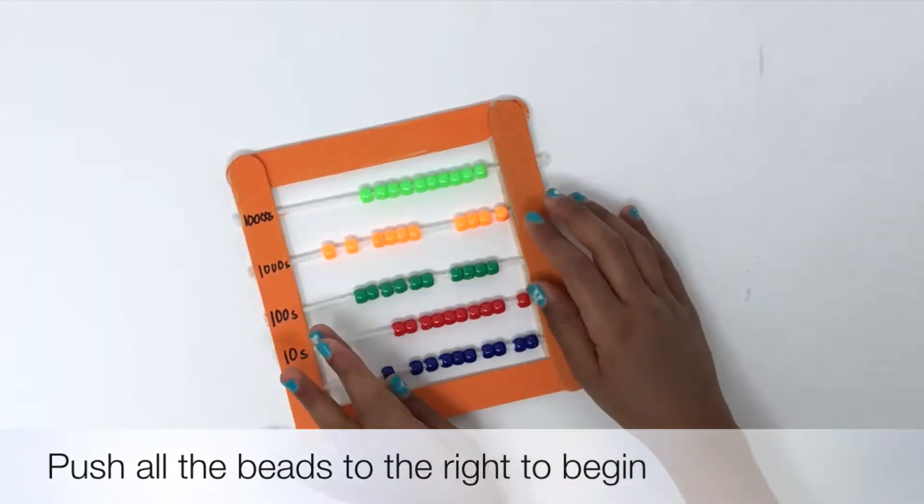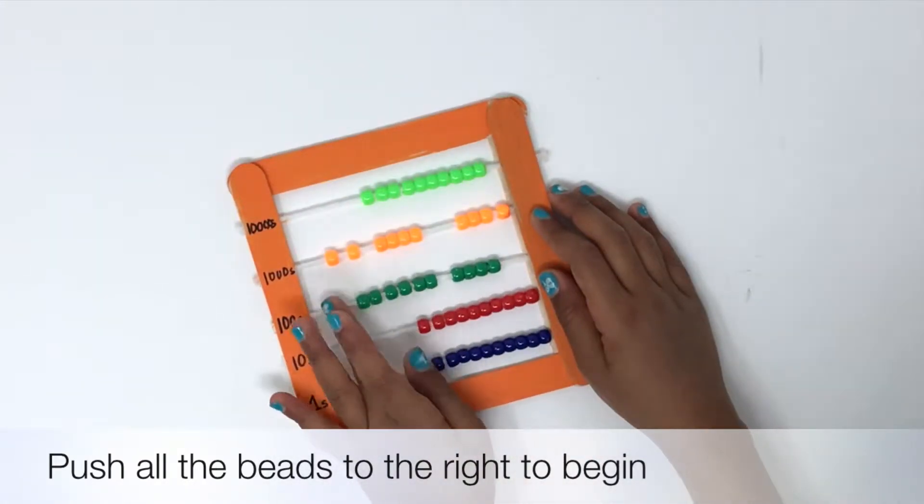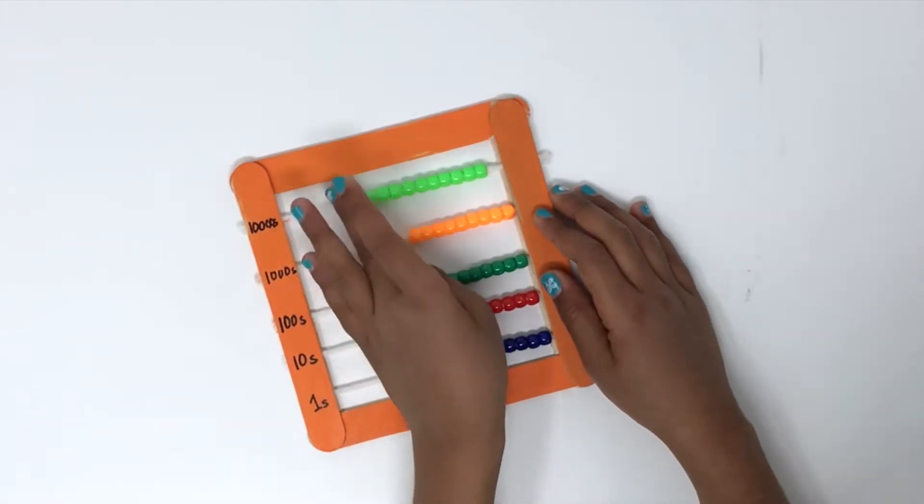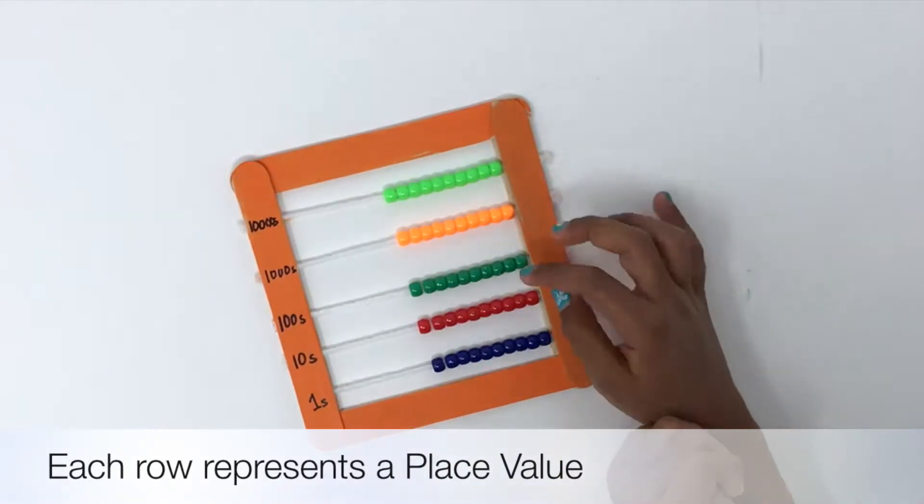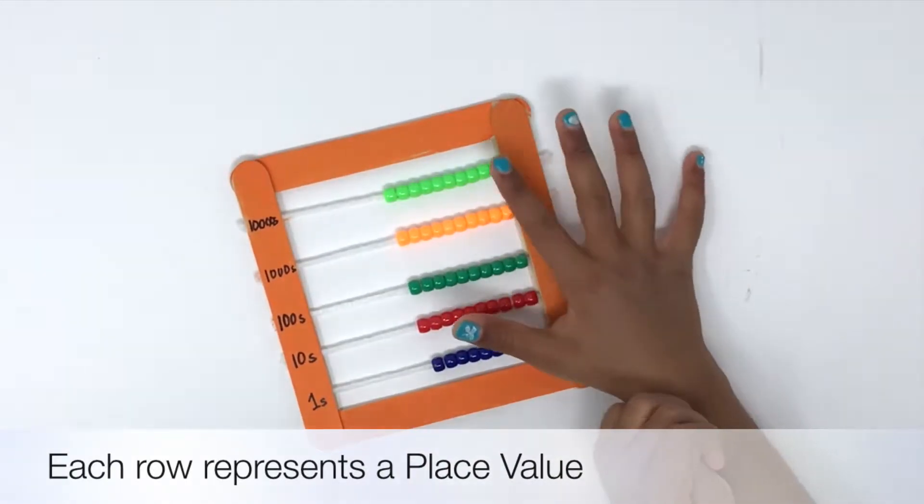Let's begin counting by pushing all our beads to the right in all the rows. Each row in an abacus represents a place value. You have ones, tens, hundreds, thousands, and ten thousands.